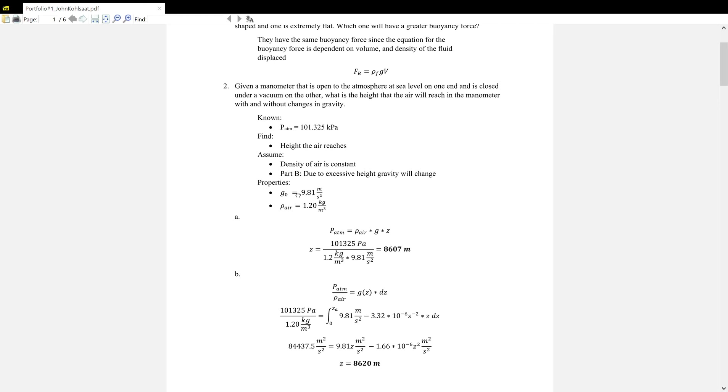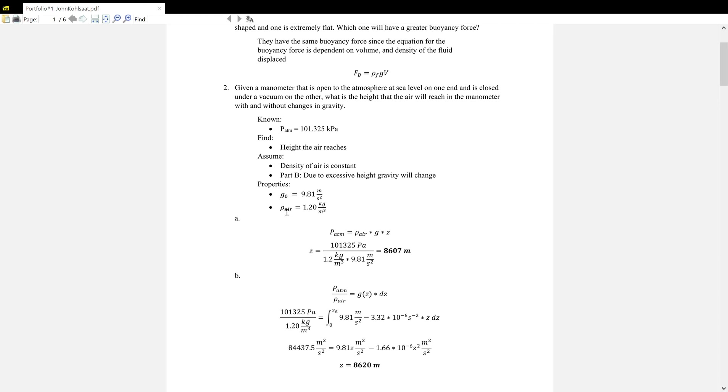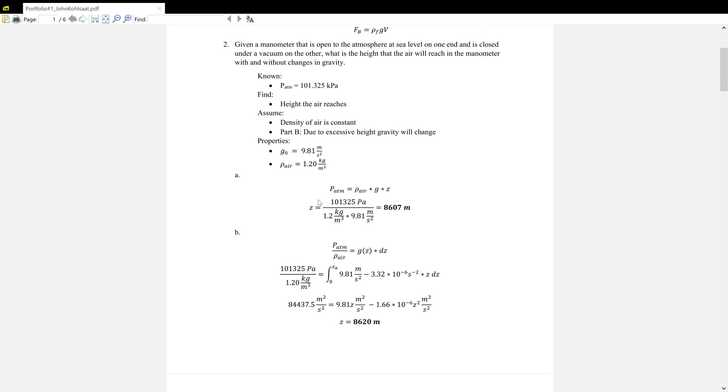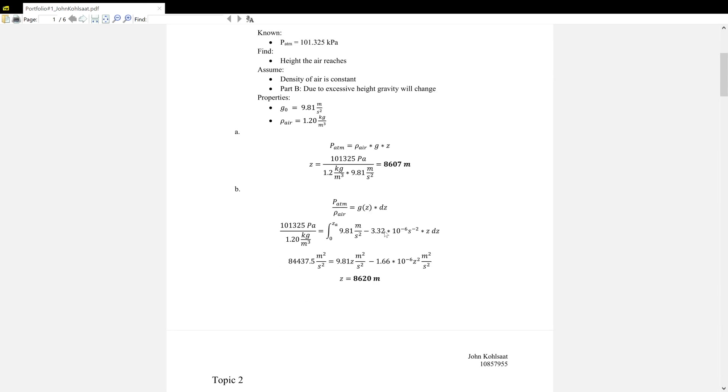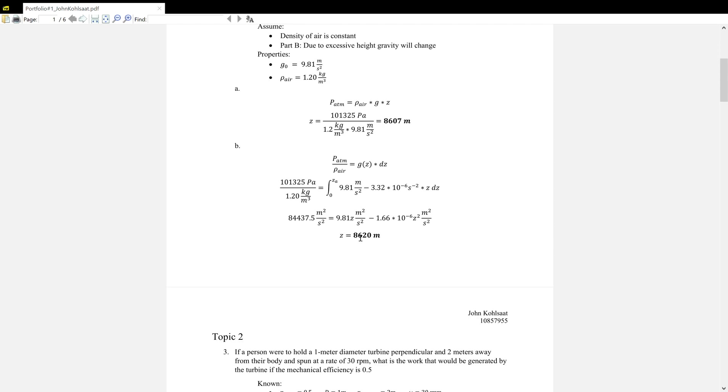So we know gravity at sea level and the density of air. For part A, it's a relatively simple calculation: pressure equals rho gz. And so we get a z of 8,607 meters. For part B, we have g of z, or g as a function of z, and we integrate with respect to z. That gets us a value of 8,620 meters, which makes sense due to the fact that gravity will be decreasing. So the air has to go to a higher height to cancel out the pressure.